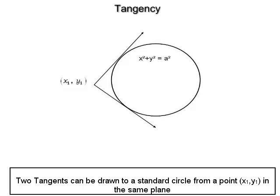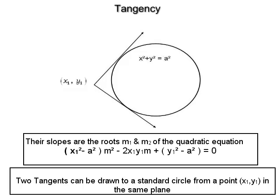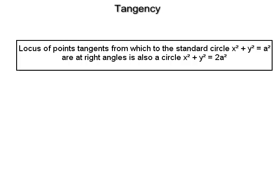In general, two tangents can be drawn to the standard circle from a point (x₁, y₁) in the same plane. Their slopes m₁, m₂ are the roots of the quadratic equation (x₁² − a²)m² − 2x₁y₁m + (y₁² − a²) = 0. The locus of points from which tangents to the standard circle x² + y² = a² are at right angles is also a circle: x² + y² = 2a², called the director circle.